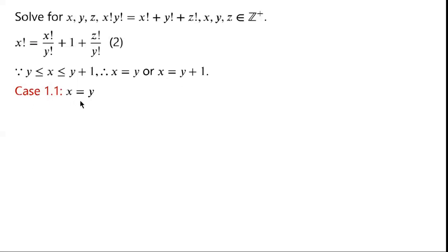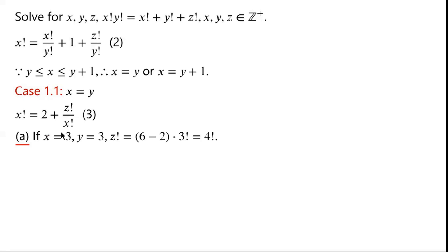Case 1.1: x equals y. Then equation 2 becomes x factorial equals 2 plus z factorial over x factorial. We know that x is greater than or equal to 3. When x equals 3, y equals 3 (since x equals y). We substitute x equals 3 and y equals 3 into equation 3, and we find that z factorial equals 6 minus 2 times 3 factorial, which is 4 factorial. Thus z equals 4.